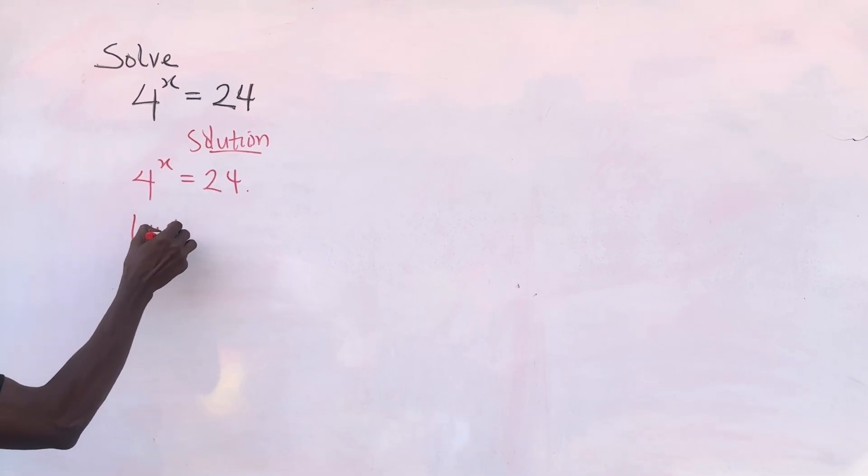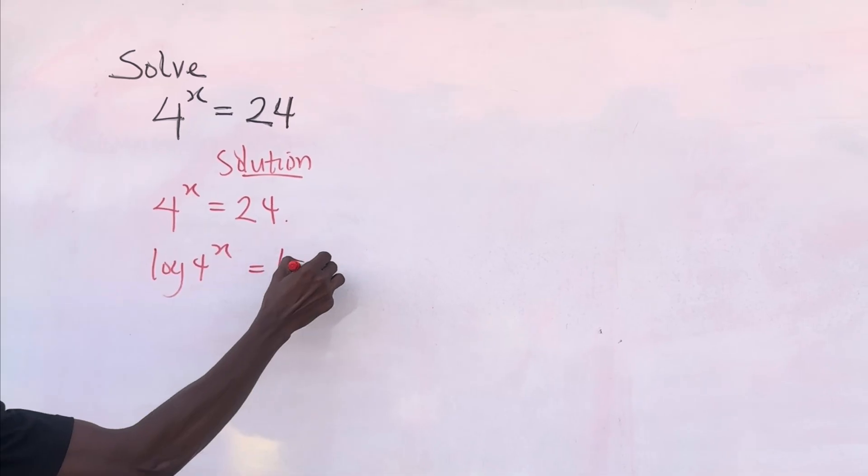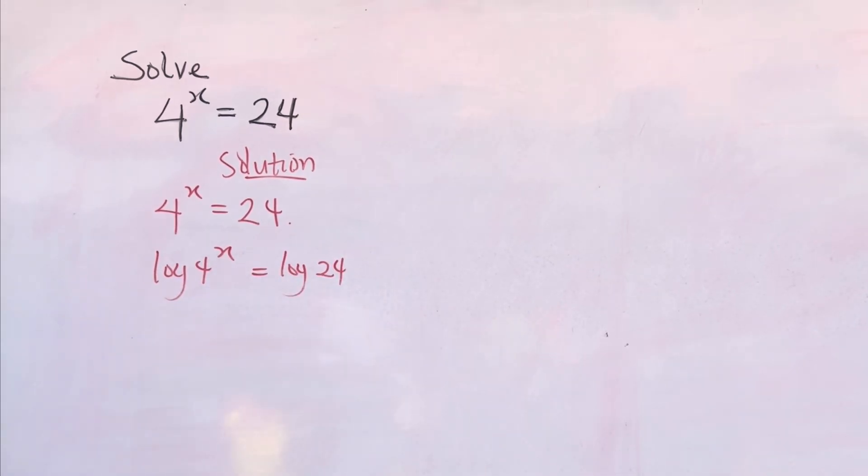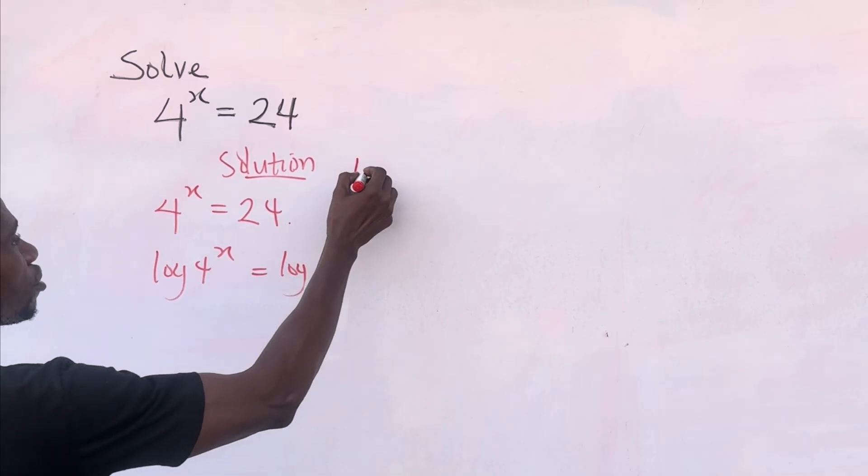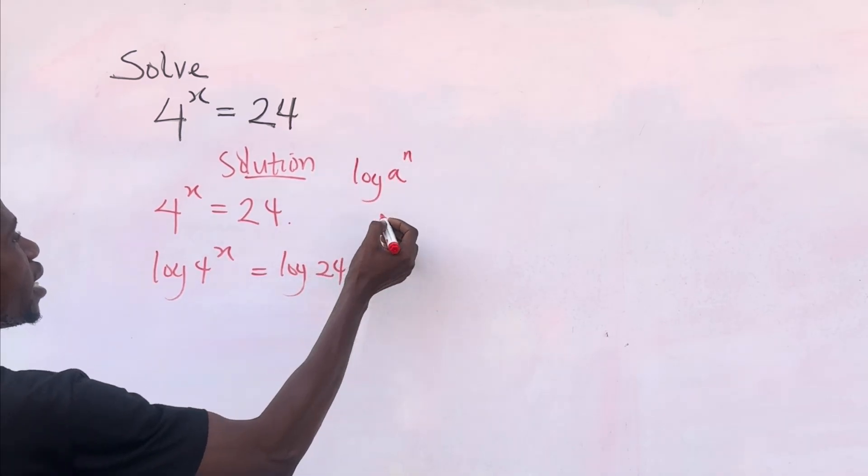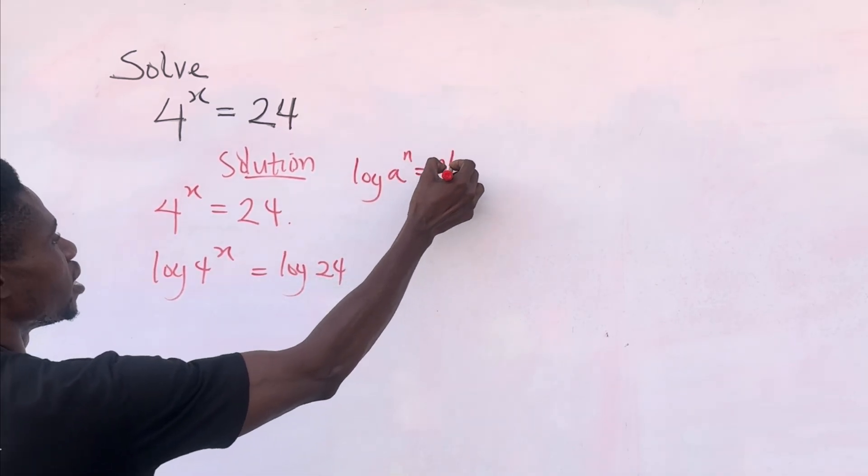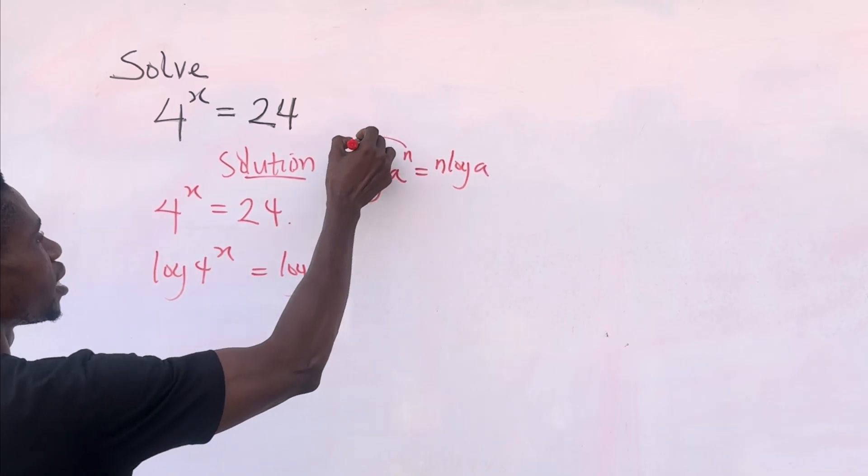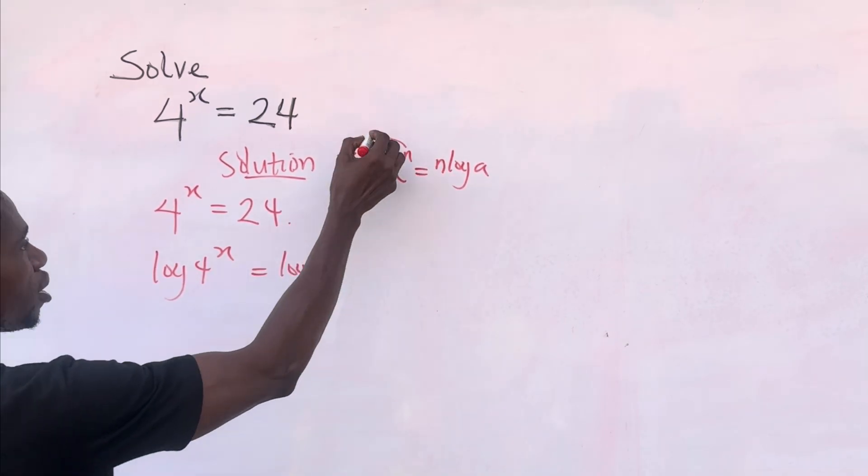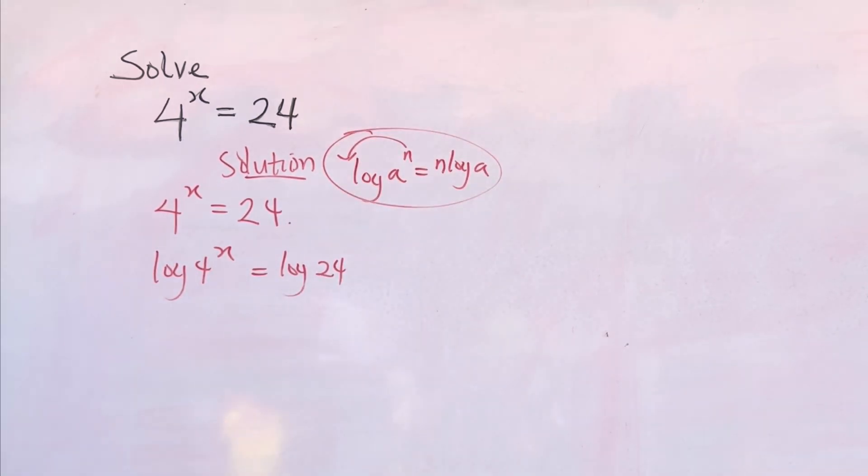So log 4 raised to the power of x equal to log 24. Remember this law of logarithms that says if you have log a raised to the power of n, you can be written as n log a. That this n can be brought this way.